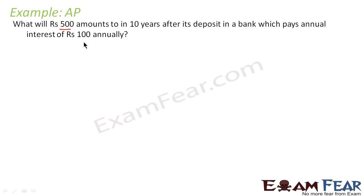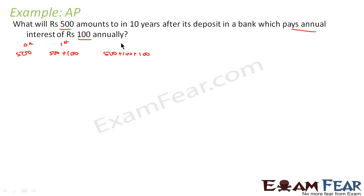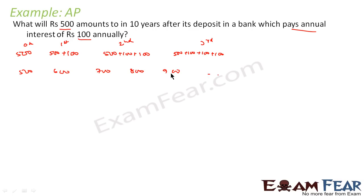Let's take a similar example: 500 rupees was deposited for 10 years, but this time the bank pays a fixed annual interest of 100 rupees. The interest is fixed, so after the 0th year the amount is 500. At the end of the 1st year it becomes 500 + 100 = 600, then 600 + 100 = 700 in the 2nd year.